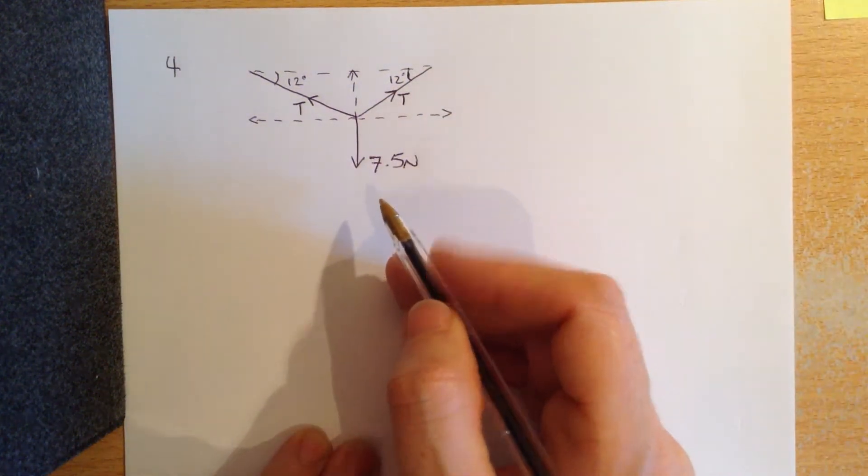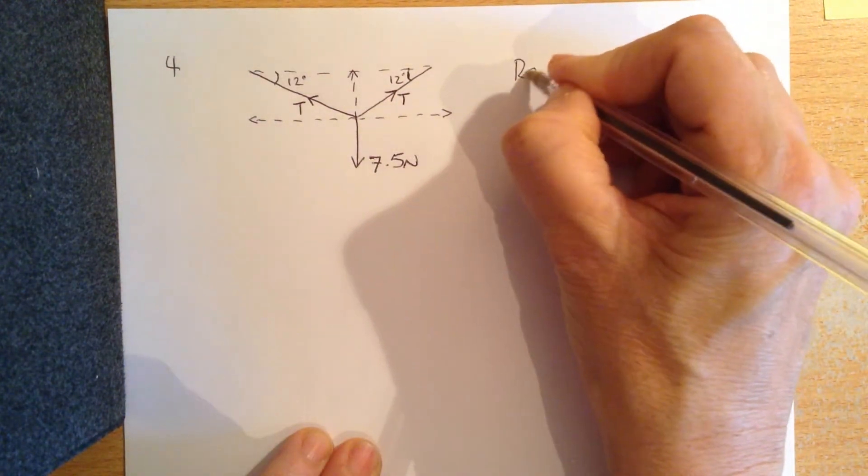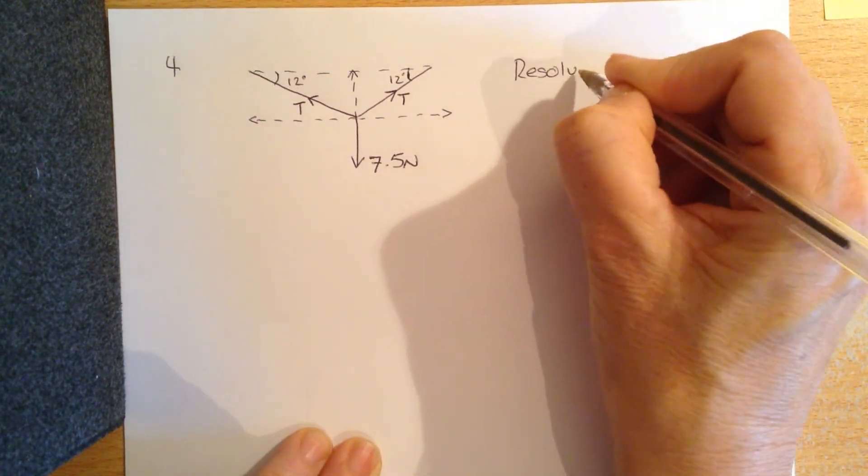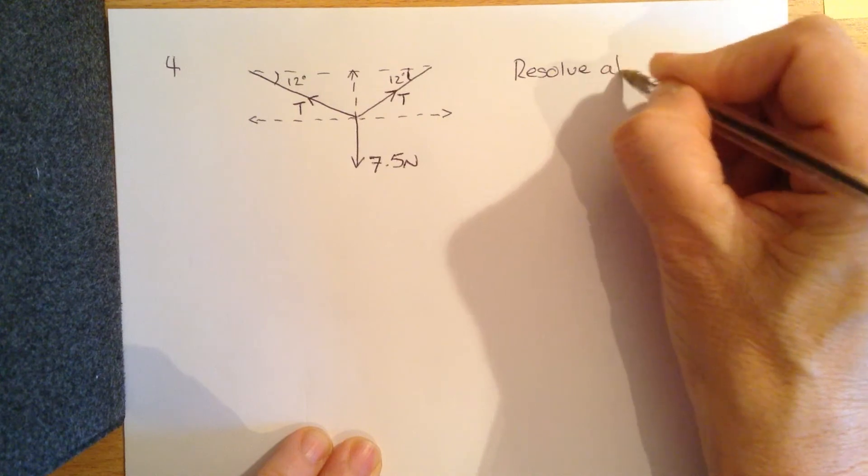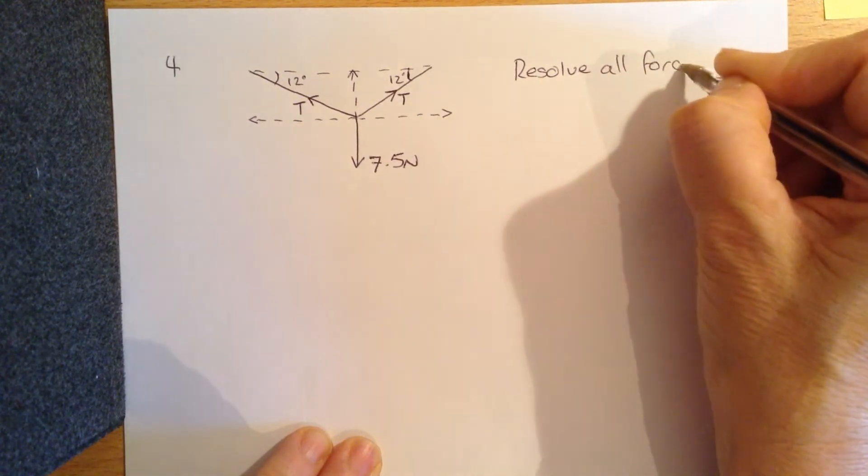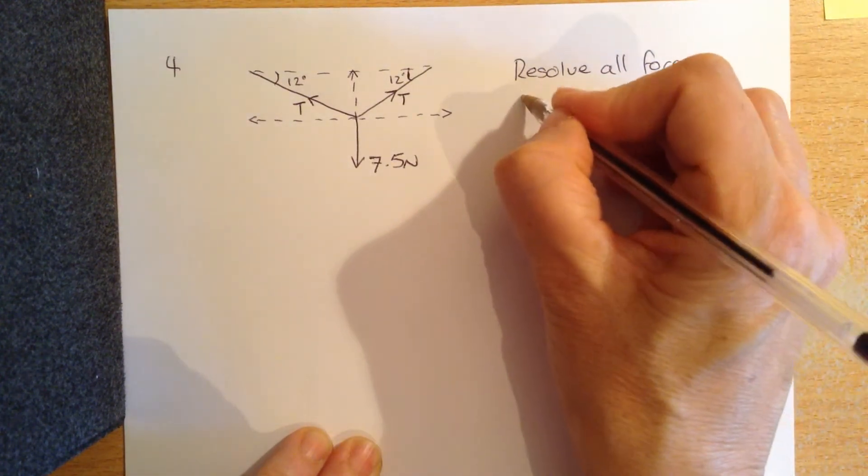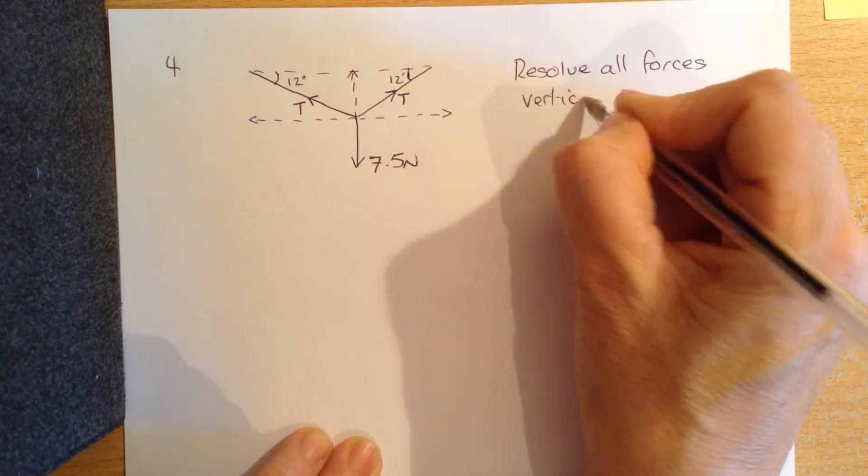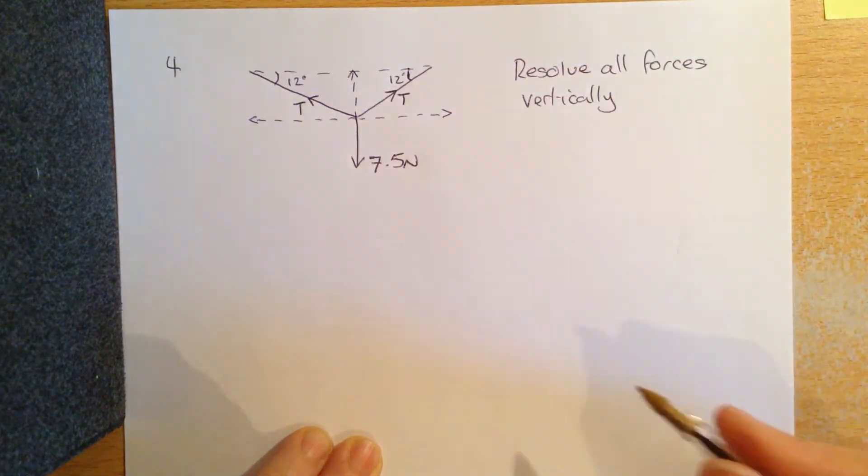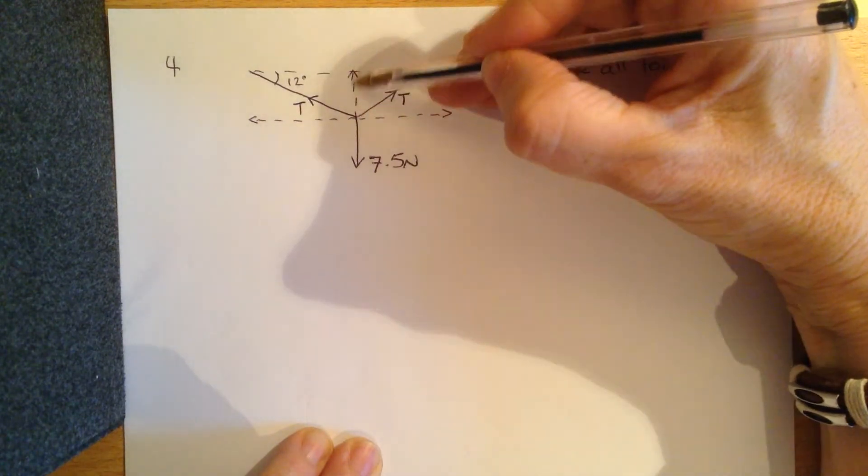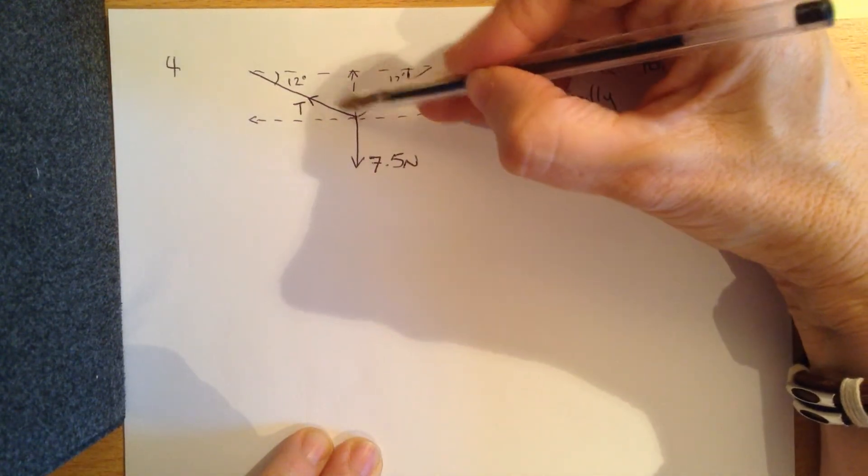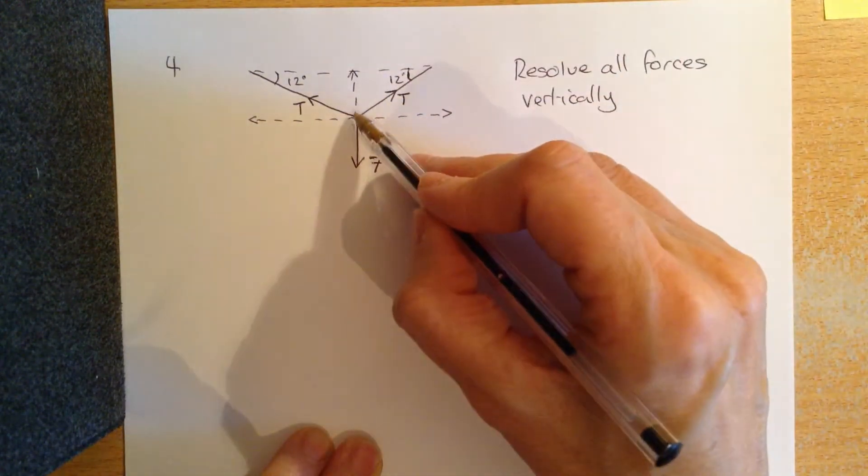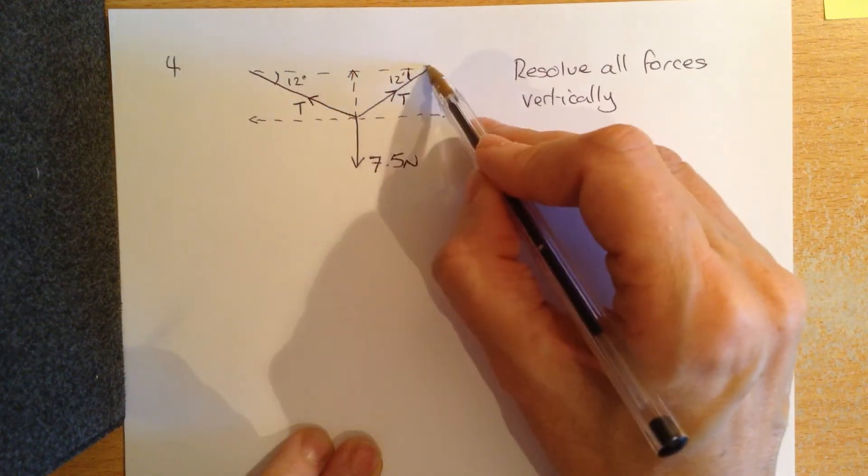And then we could say it has the same line going up here. So if we resolve all the forces into the vertical plane, we just need this component of this tension and this component of this tension.